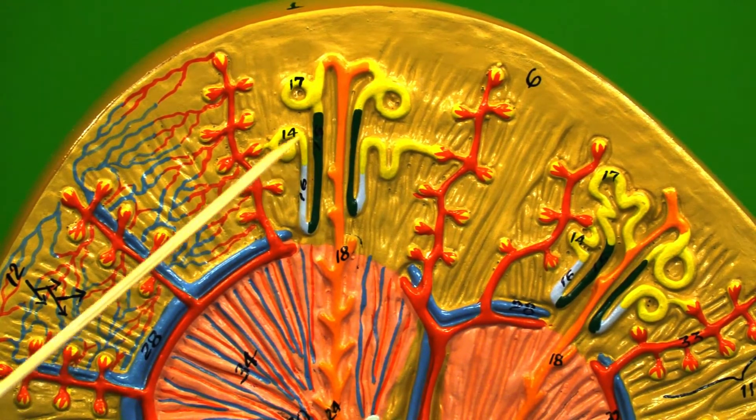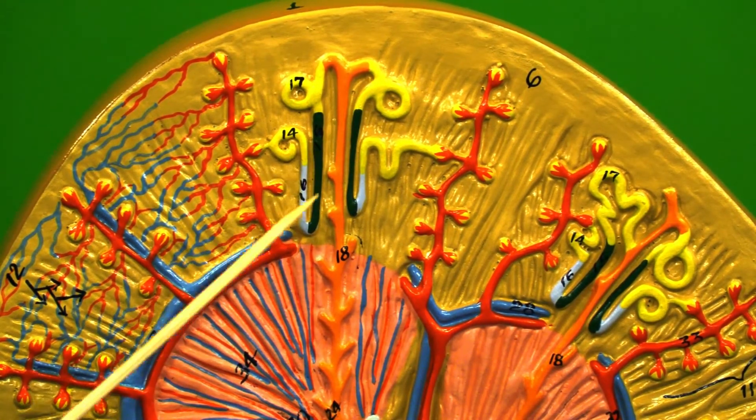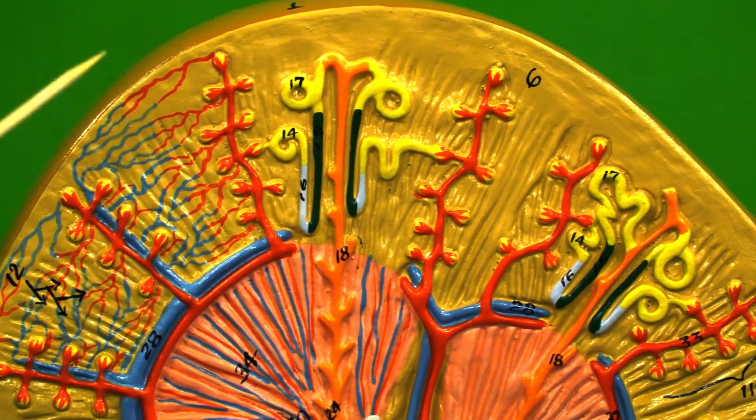After the proximal convoluted tubule we come into the loop of the nephron, often called the loop of Henle.